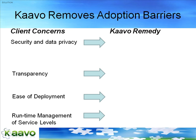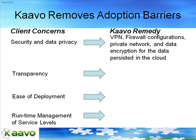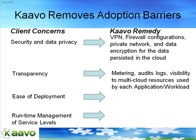To remove the security and data privacy concerns, Kavo provides tools and processes to set up VPN, firewalls, private network, and data encryption for the data persisted in the cloud. To provide transparency, Kavo provides metering, audit logs, and visibility to multi-cloud resources used by each application and workload.